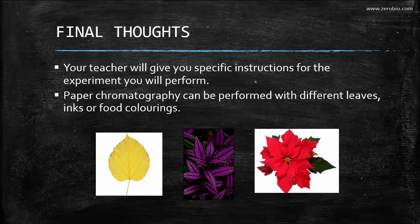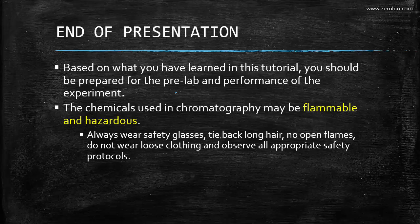In terms of performing the actual lab, you'll get specific instructions — you'll be getting leaves and crushing them, using acetone and petroleum ether, then spotting your mixture. There are various chemicals and pieces of equipment you'll need. But this video was really about getting the theory behind it. It's interesting because you can use paper chromatography on a number of substances — in addition to black ink, you can try red leaves, purple leaves, yellow leaves and you'll get different separations and different quantities of each pigment. That's the end of the presentation. Hopefully you'll be prepared for the pre-lab and performing the experiment. Keep in mind that the chemicals used in chromatography can be dangerous — they may be flammable or hazardous, so wear your safety glasses, tie back your long hair, don't have any open flames, watch your loose clothing, and observe all appropriate safety protocols for a successful and enjoyable lab experience.